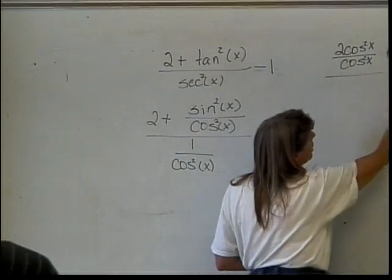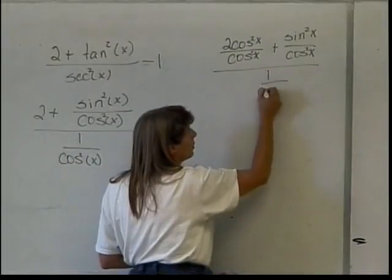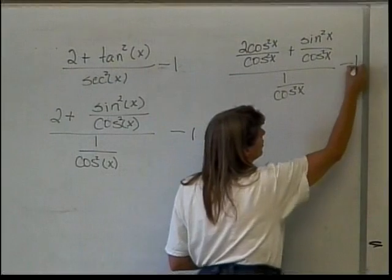Plus a sine squared of x divided by a cosine squared of x. That's getting my common denominator. I still have this big denominator of 1 over the cosine squared of x. And I still have this minus 1.